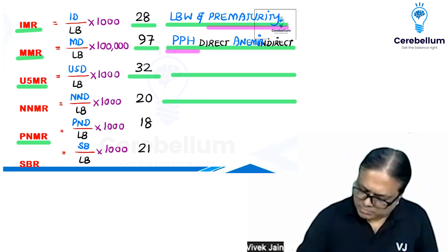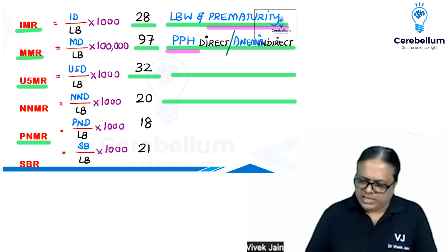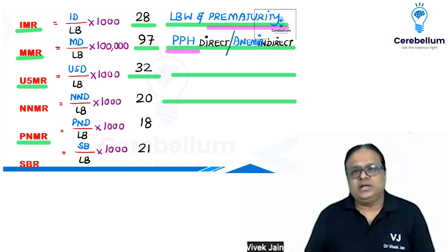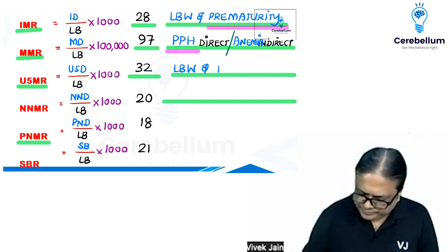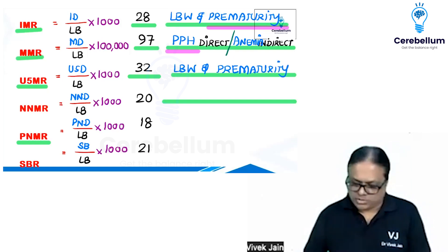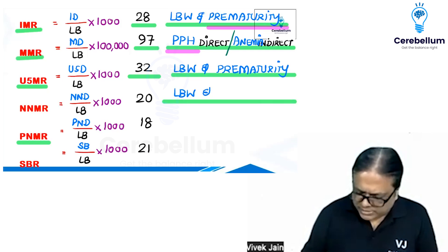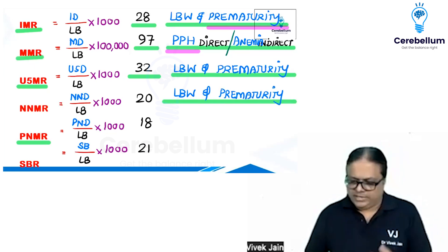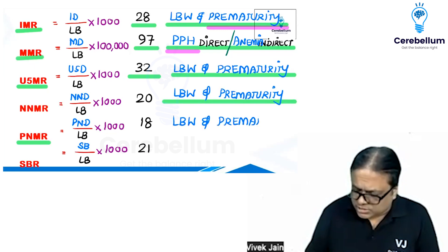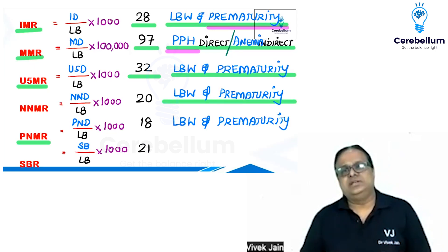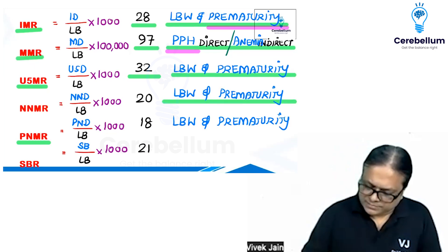For under-5 mortality rate, the most common cause in the country is not congenital malformations — it is again low birth weight and prematurity. Numbers are available in the RCH program. Neonatal mortality rate — also low birth weight and prematurity. Perinatal mortality rate — also low birth weight and prematurity. So in all of these, the single best answer is prematurity.